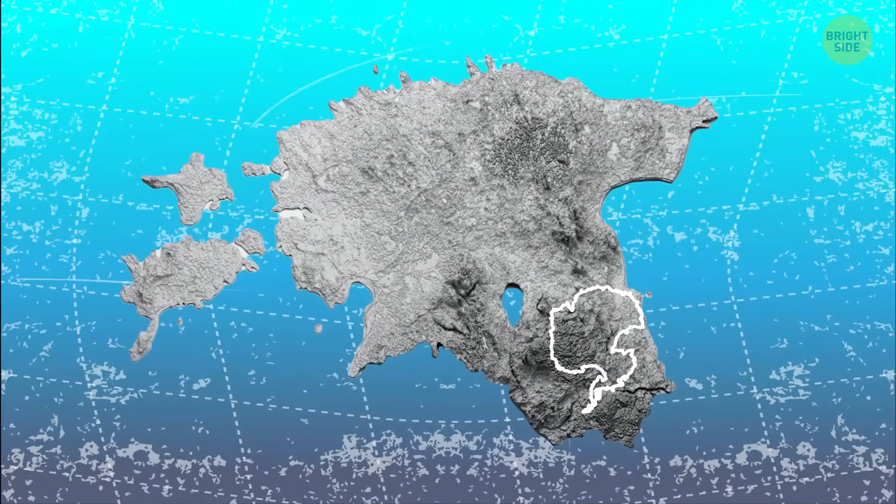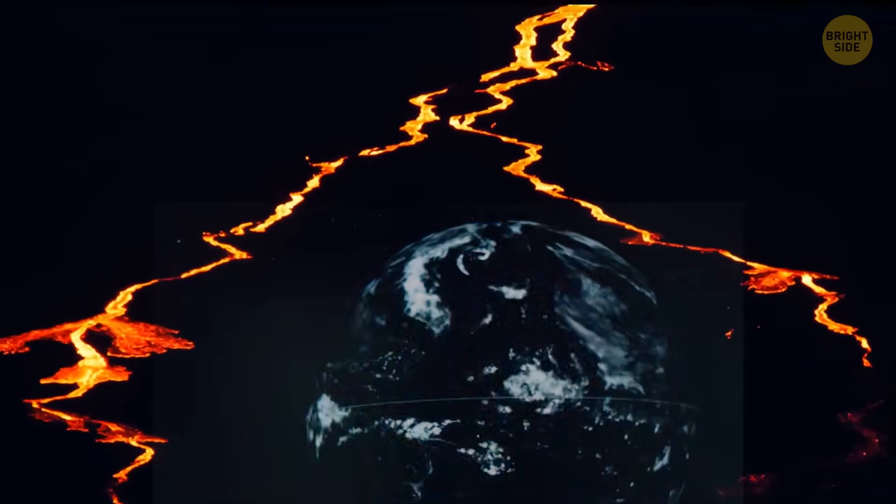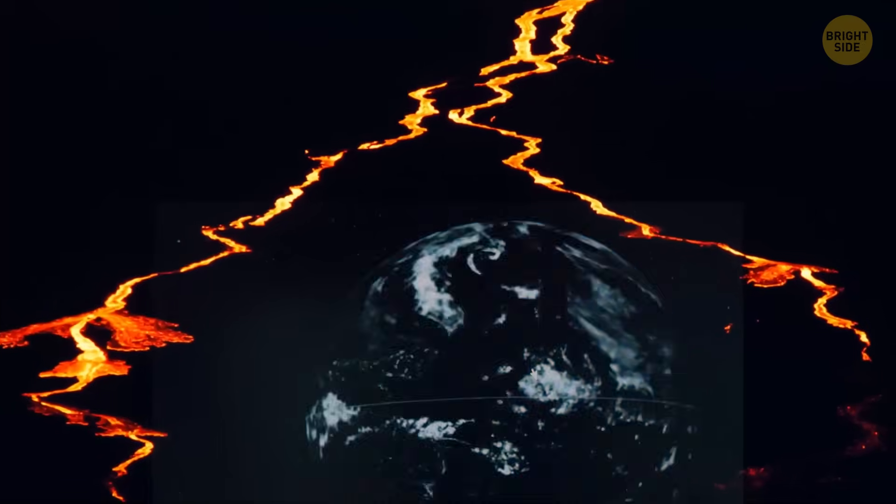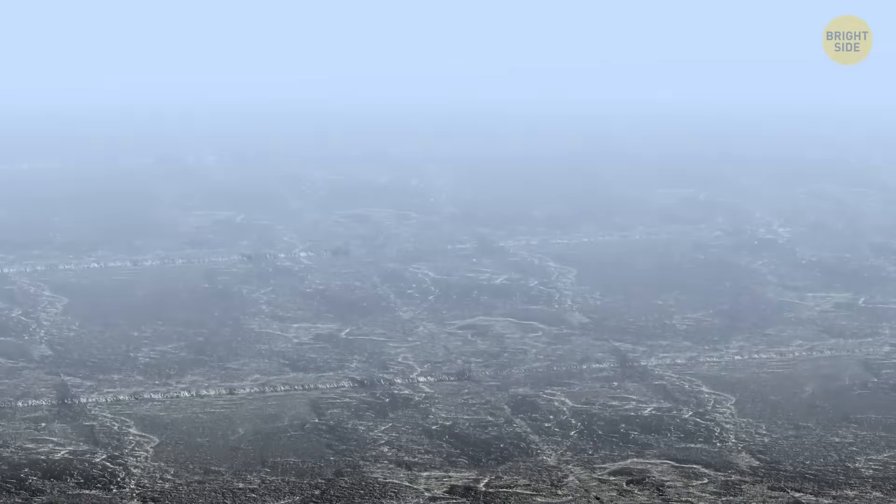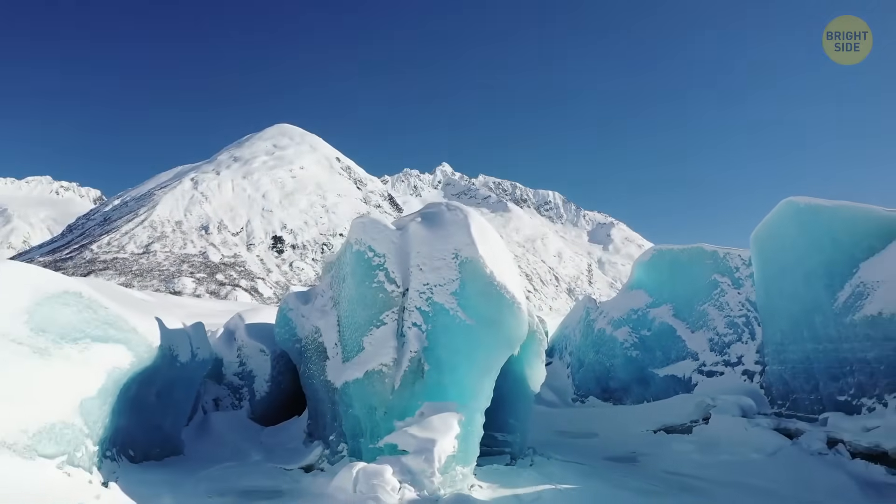It used to be one huge landmass. But when Gondwana broke apart, the poor continent got stretched by tectonic forces. Parts of land were pulled away from each other and they got torn apart. And that's how we got these big chunks or blocks of land under thick layers of ice.